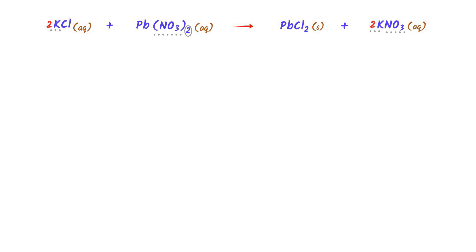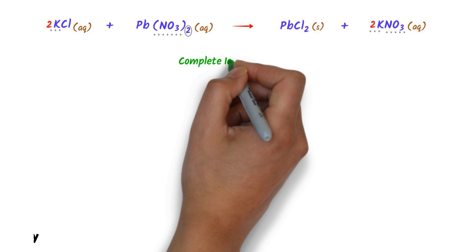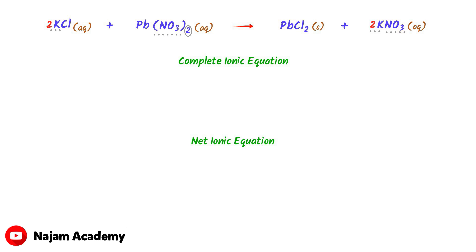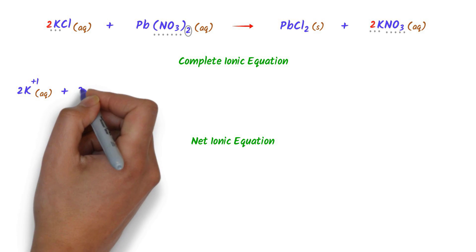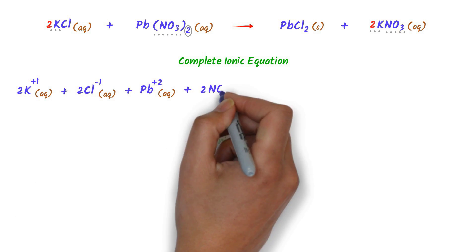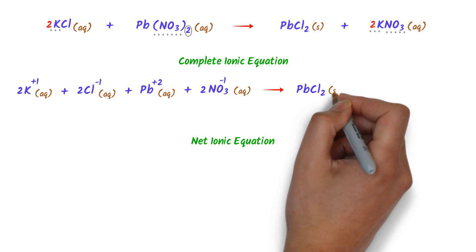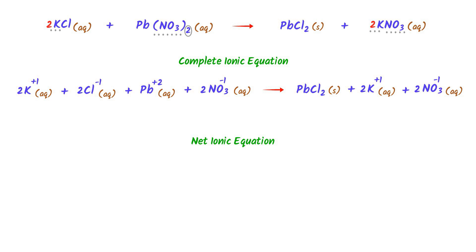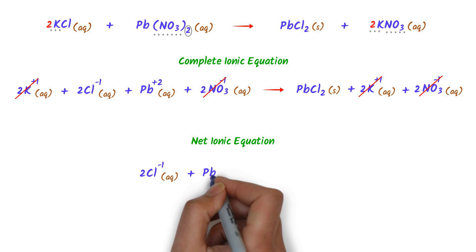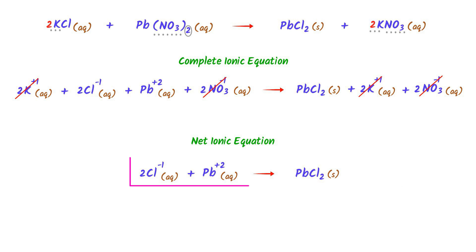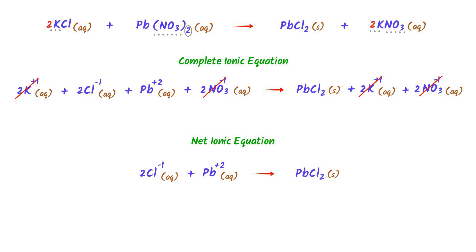This is the completely balanced chemical equation. The fourth step is to write the complete ionic equation and net ionic equation. I write: 2K⁺ + 2Cl⁻ + Pb²⁺ + 2NO₃⁻ → PbCl₂(s) + 2K⁺ + 2NO₃⁻. Canceling spectator ions — two potassium ions and two nitrate ions on both sides — I get: 2Cl⁻ + Pb²⁺ → PbCl₂. This is the net ionic equation. Using these four simple steps, we can easily write the complete ionic equation and net ionic equation.